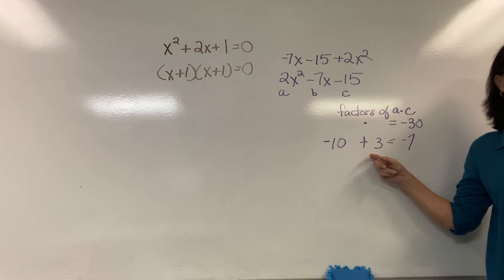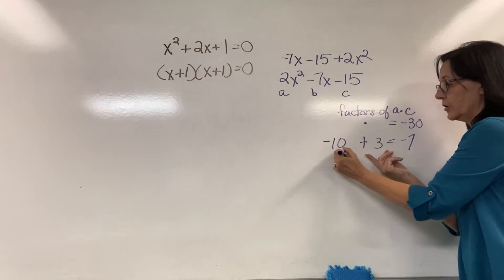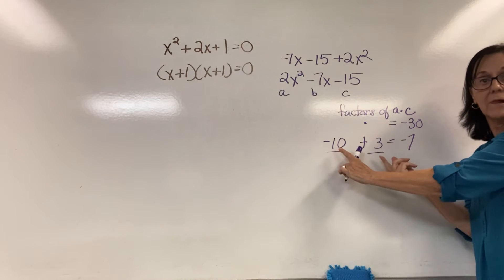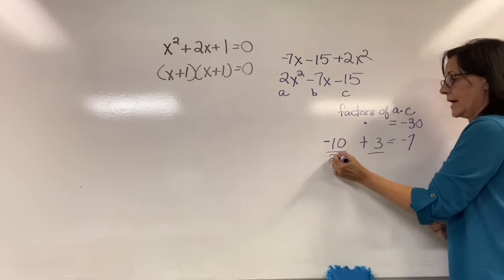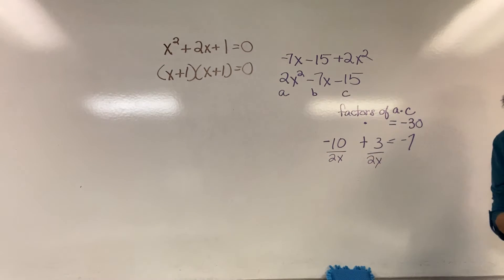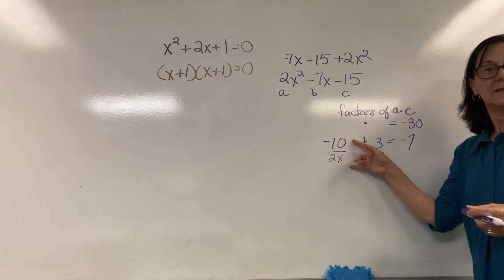Now this next little step is just a trick. I would say there's nothing magical about it, but there is because it gives you the answers every time. Once you get your factors, you're going to draw a little line under your factors and you're going to write that lead coefficient, your a value with an x.